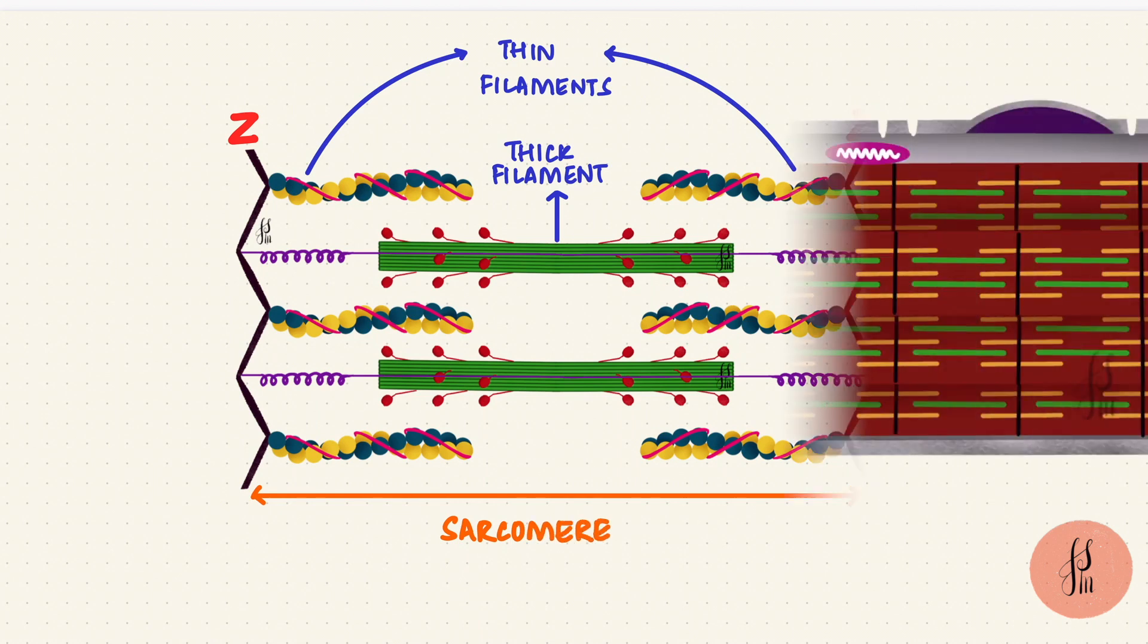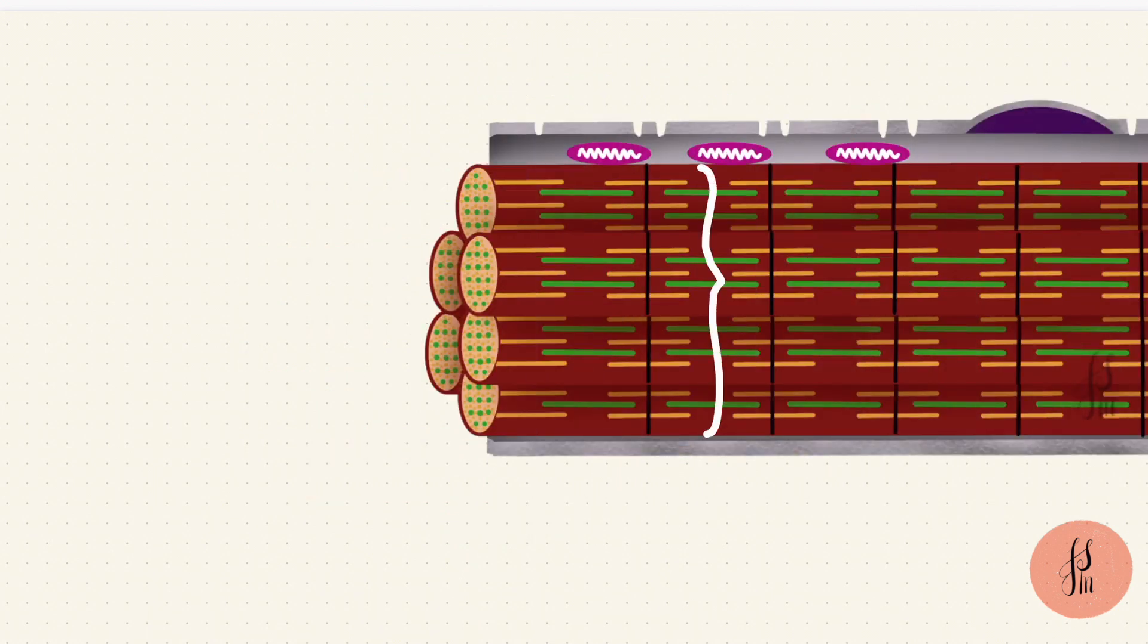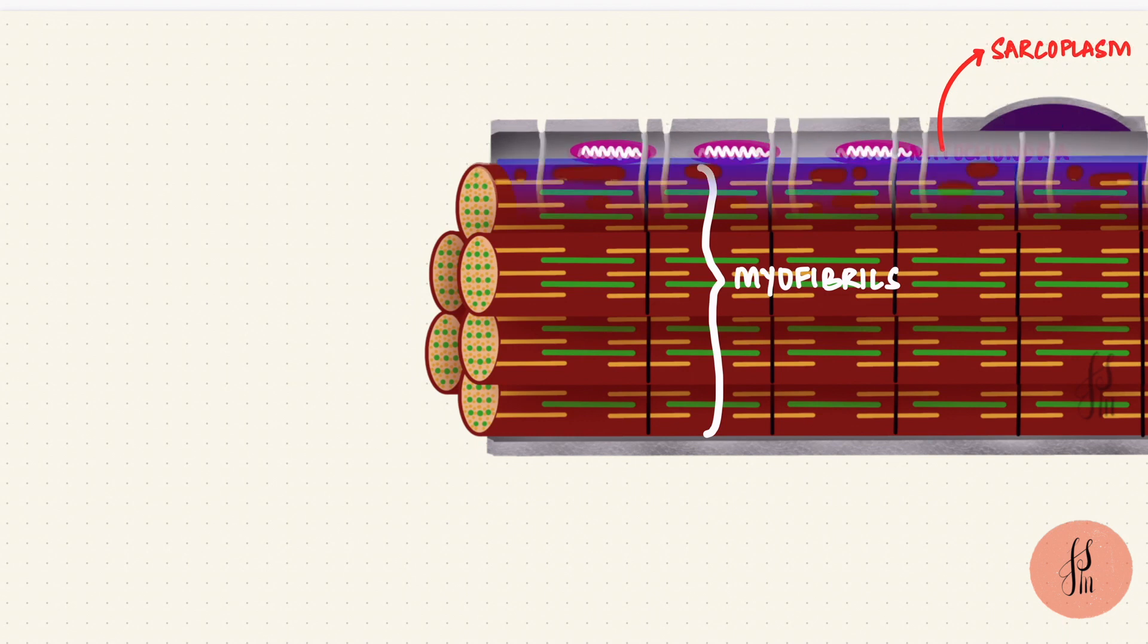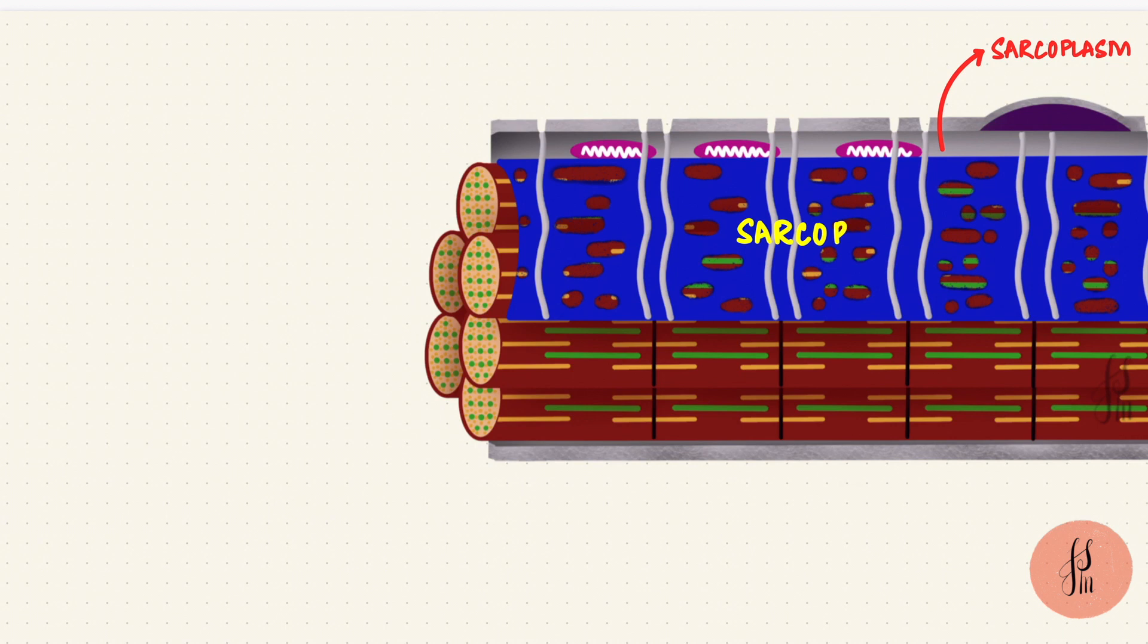This is in the sarcoplasm of the muscle cell, which is a special name for the muscle cell cytoplasm. So it's got other stuff as well, like nuclei, mitochondria, and a specialized endoplasmic reticulum called the sarcoplasmic reticulum. This is special because it stores lots of calcium, and you'll see why that's important in a bit.